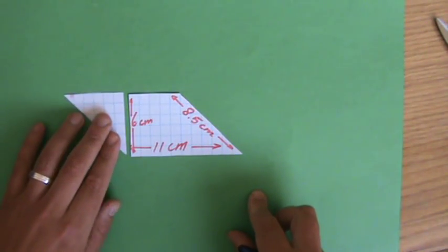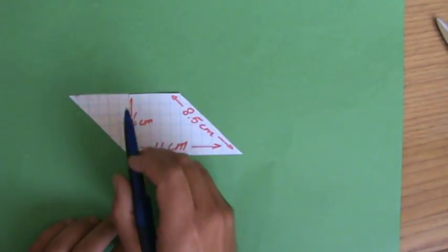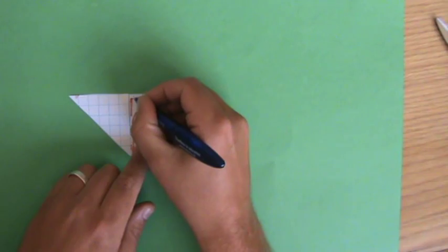Okay. So a parallelogram, what is the area of a parallelogram? It is base times height, where the base and the height make the angle of 90 degrees.